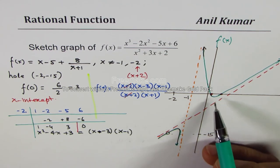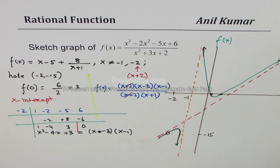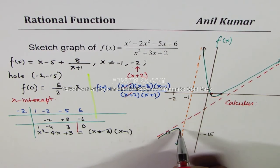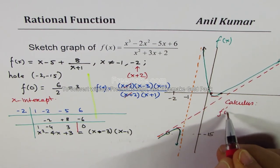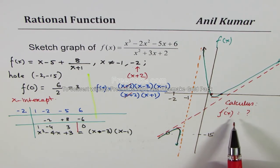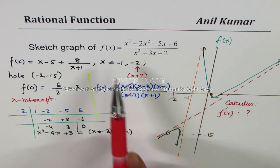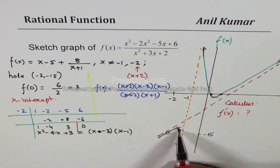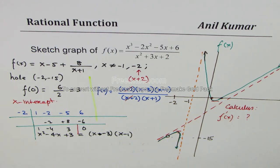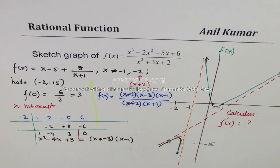With the x and y intercepts we can now fairly accurately draw the graph. Students who have done calculus can find the derivative to locate local minima and maxima for a more accurate sketch. I hope this gives you a good picture of sketching rational functions for both pre-calculus and calculus students. Feel free to write your comments and share your views — thanks for watching, all the best!